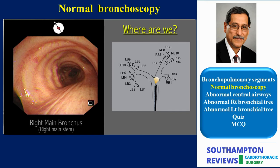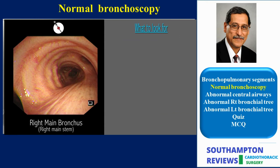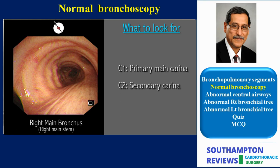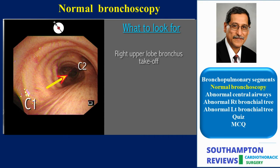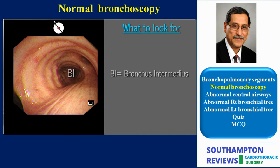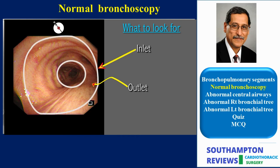Next we will examine the right main bronchus. This is a short 2 to 3 cm bronchus in vertical continuity with the main trachea. To define its territory precisely we have to define its inlet and outlet, using the concept of thinking and seeing carinae first. We have already defined the primary carina C1, which defines the inlet of the right main bronchus. The outlet is defined by the secondary carina C2, between the right upper lobe and the bronchus intermedius. Practically the right main bronchus spans the surface area from carina to carina, i.e. from C1 to C2.